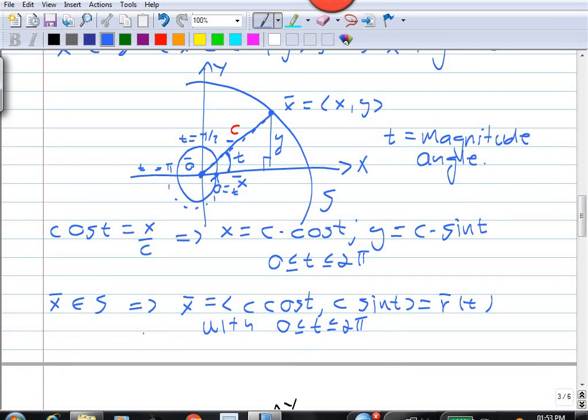And this t sits between 0 and 2π. In other words, if x is on the circle, then x is an element of the range of our vector function, x is an element of our curve C.